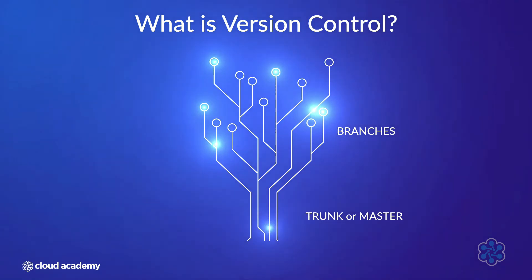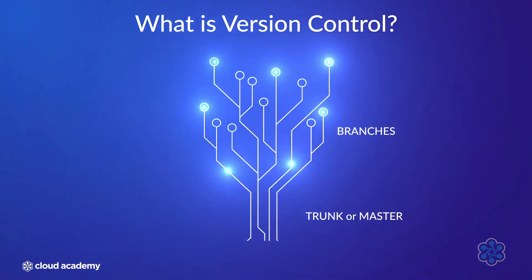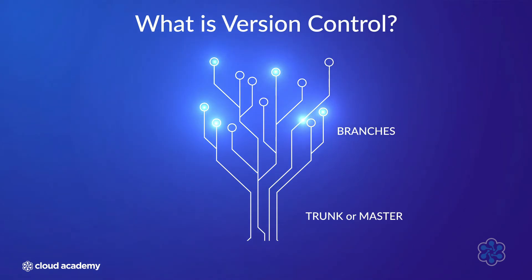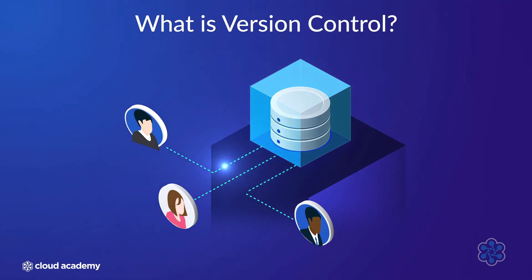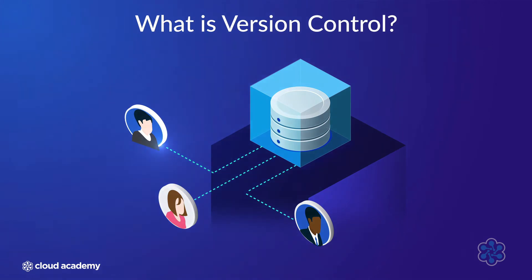This technology isn't new and falls into two main types: centralized and distributed. Centralized version control systems are modeled on client-server architecture, where developers check out files to work on, much like taking a book out from the library.